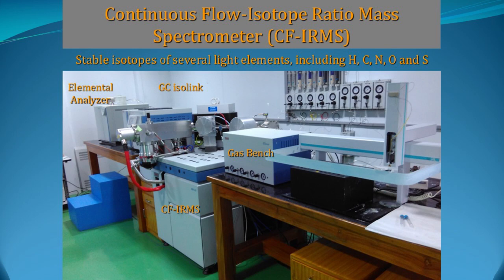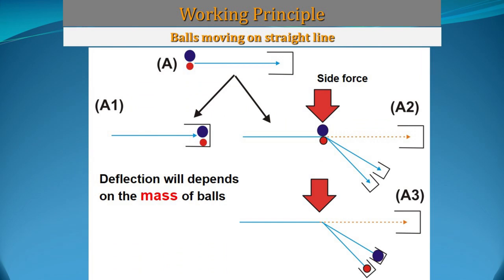I would like to explain the principle of IRMS through an example. Suppose we throw a lighter and a heavier ball in a linear direction — in normal conditions those balls will travel in a linear pattern. But if we apply a side force, the balls will deflect, and that deflection depends on the mass of the ball. A lighter ball will deflect more than the heavier ball. IRMS works on this same principle.